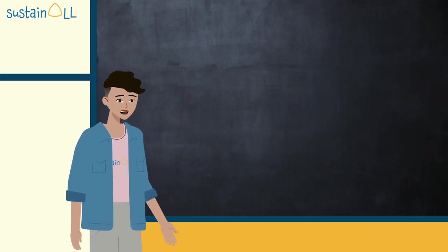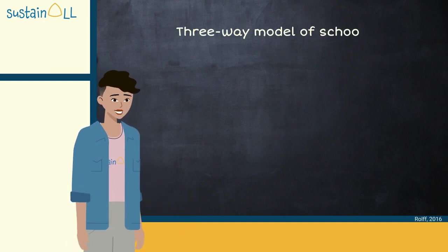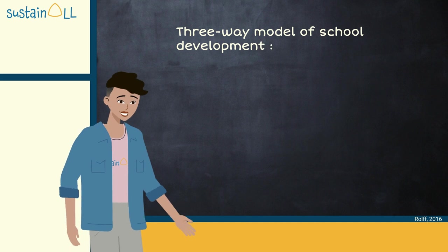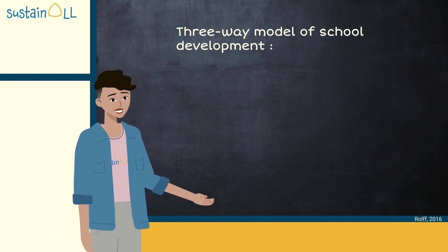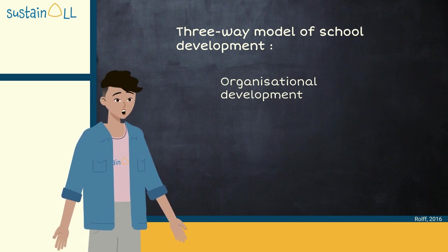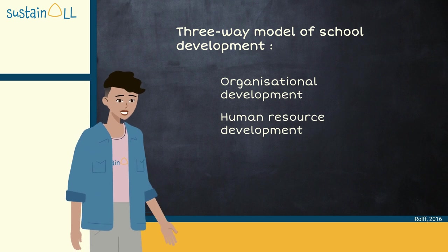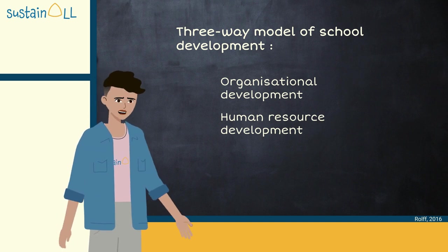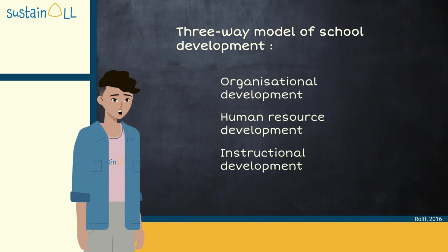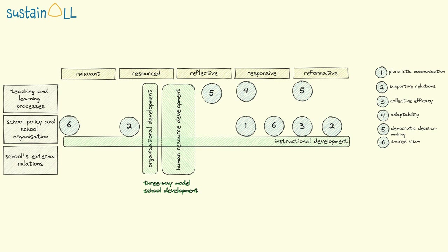The next and fourth model is the three-way model of school development. It explains that change needs to occur in the following three areas: organizational development — meaning how things are done at school needs to change; human resource development — which means that teachers need to be trained in how to do things differently; and instructional development — meaning that teaching approaches and methodologies need to change. These development areas correspond on different levels with the other frameworks.